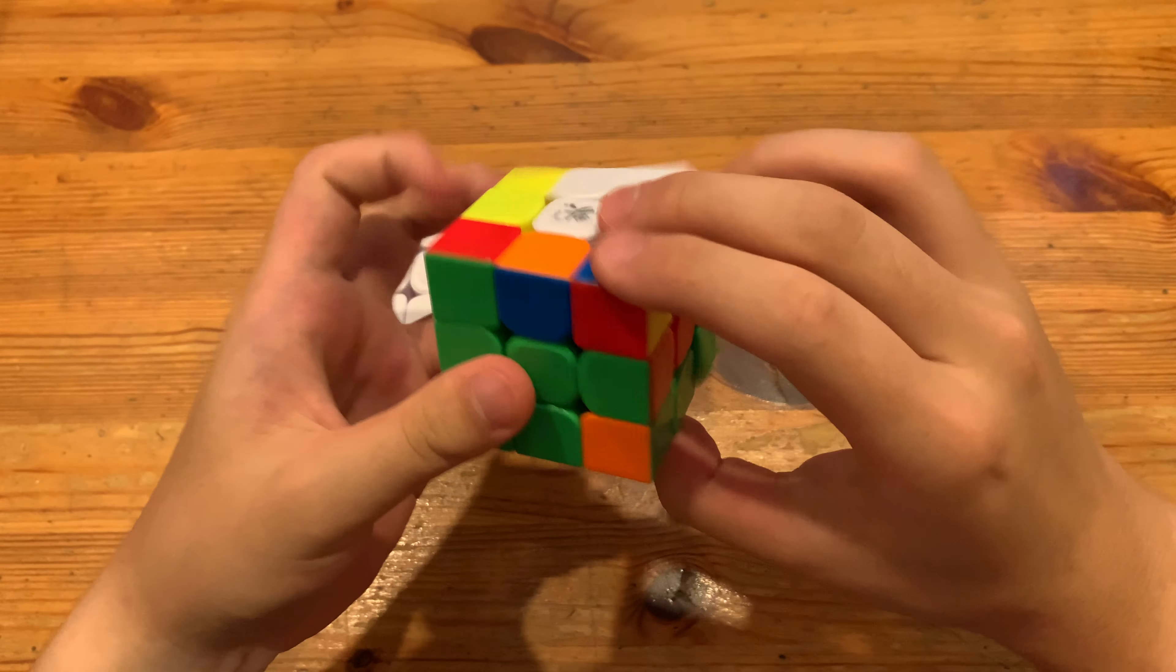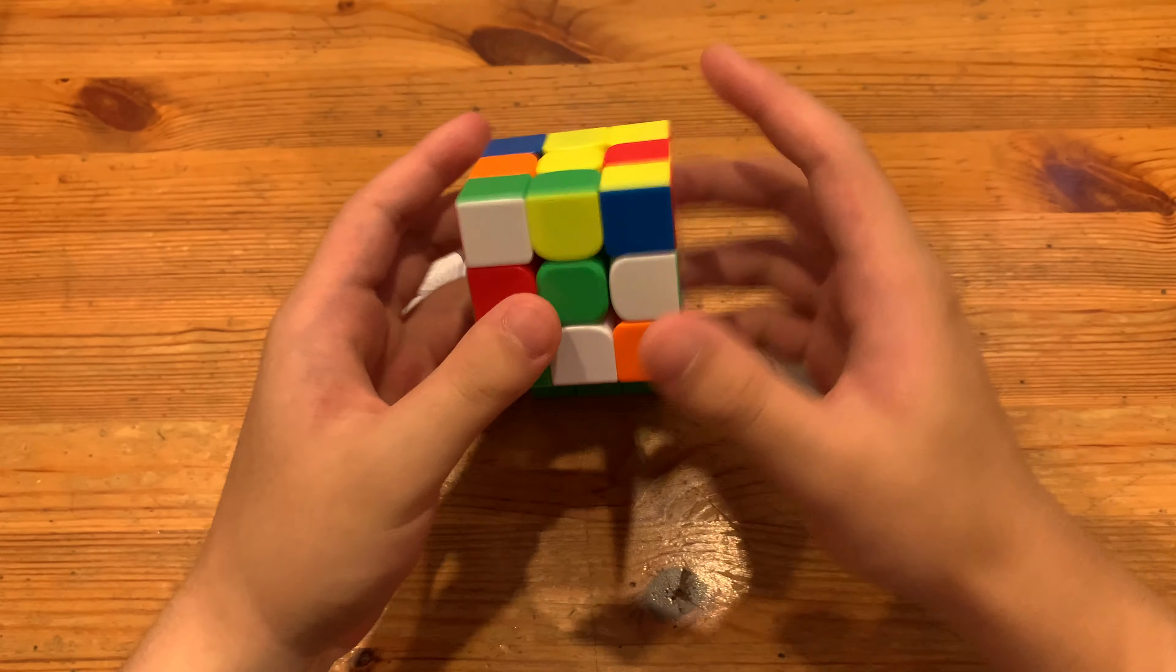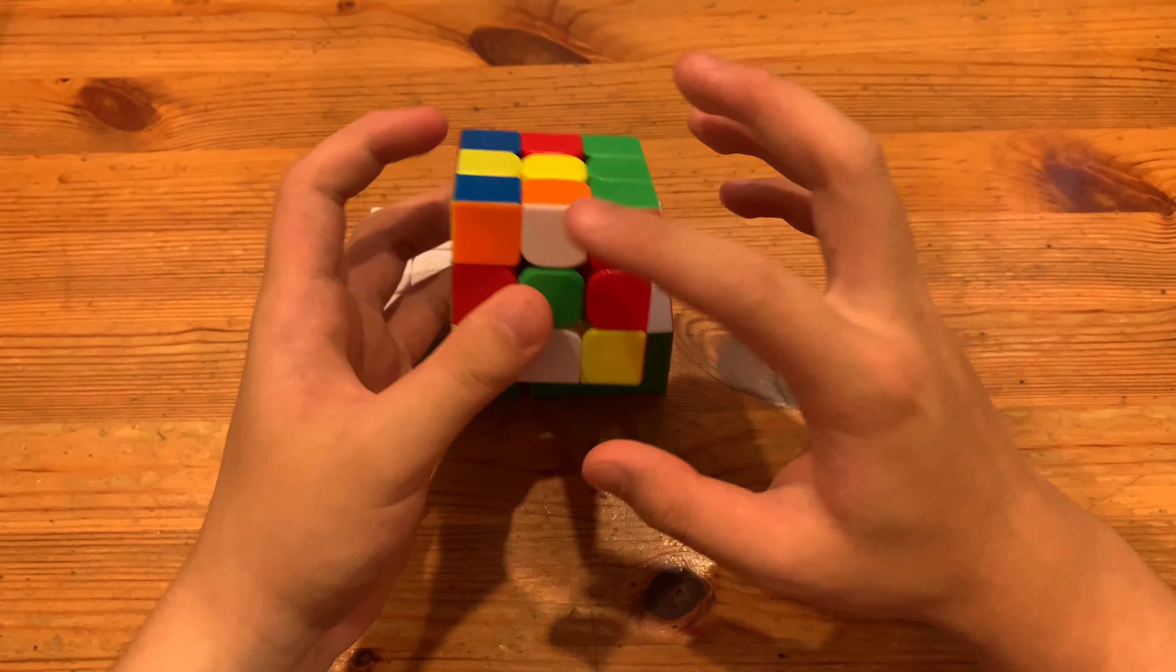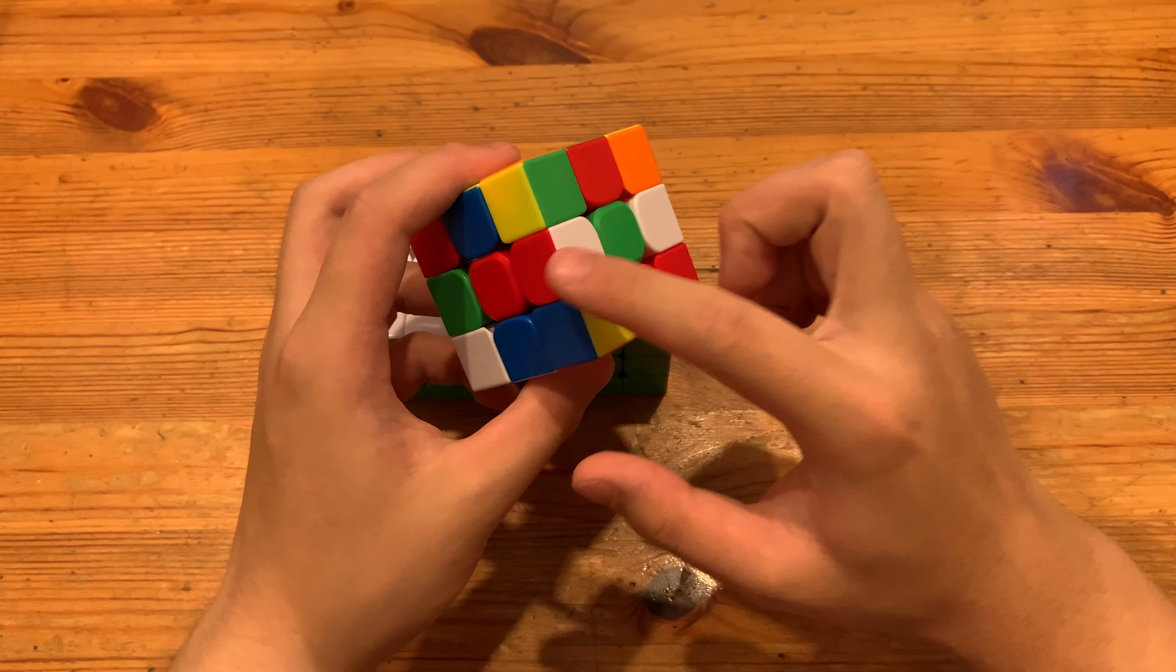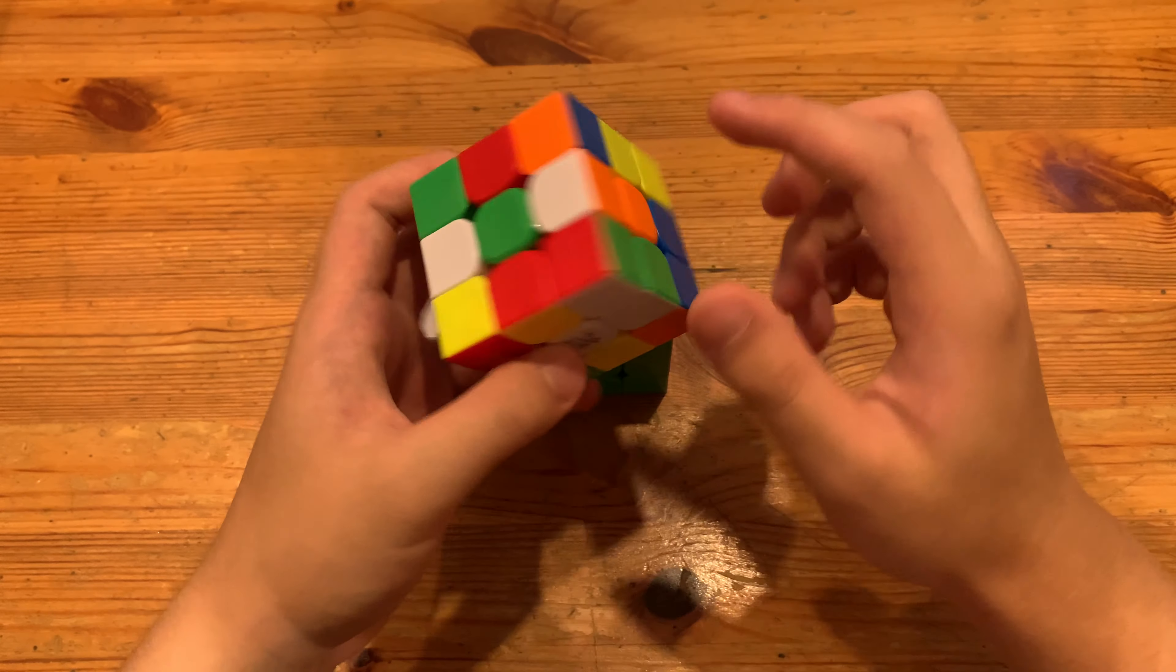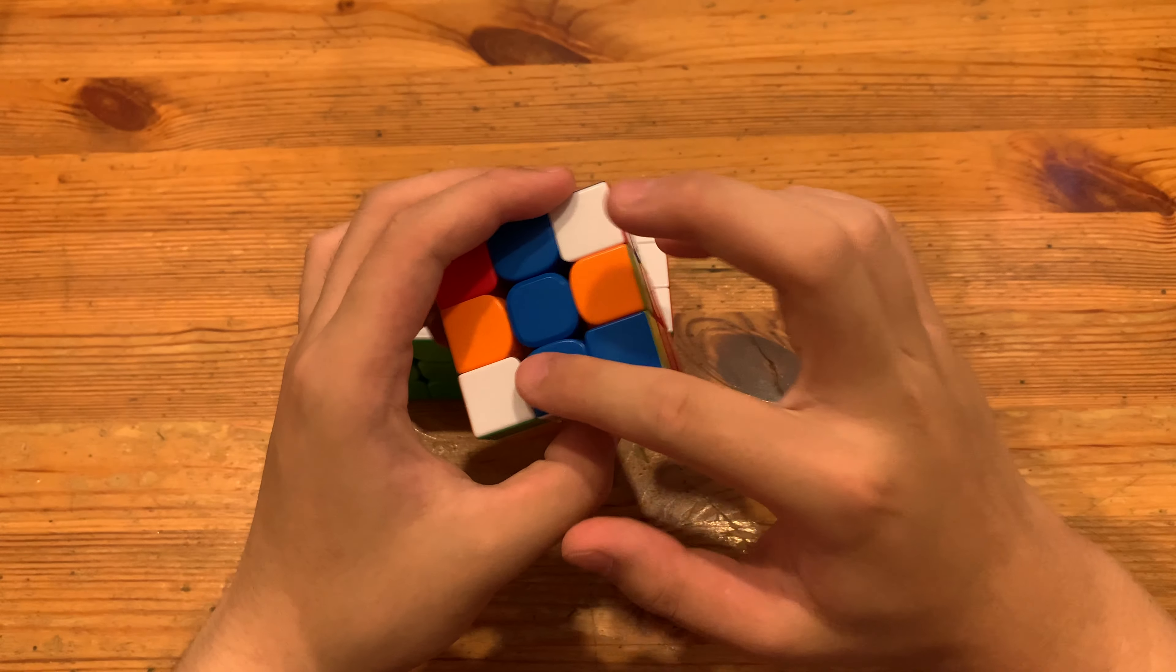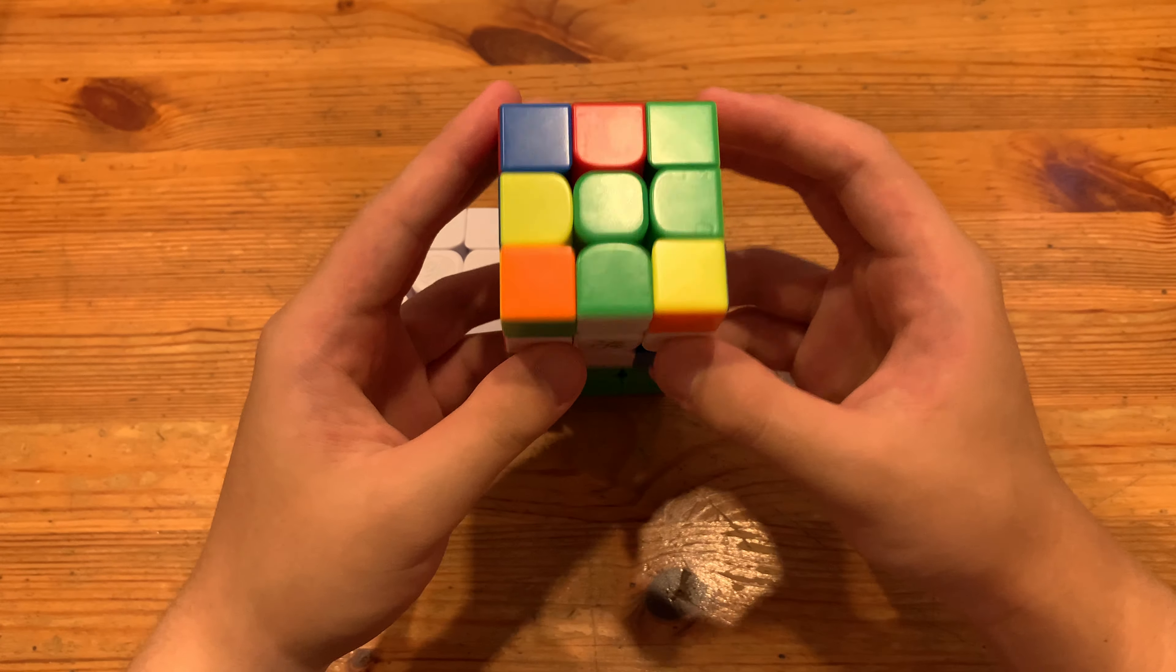For this third solve, I'll solve cross by doing R prime to insert this cross edge. Then to solve the rest of the cross, I'll do a U prime to put these two cross edges over here. And then F, this aligns it where it should be. Then here I'll just insert these two where they should be, so the green and blue. And then finally insert the rest with just an M prime.